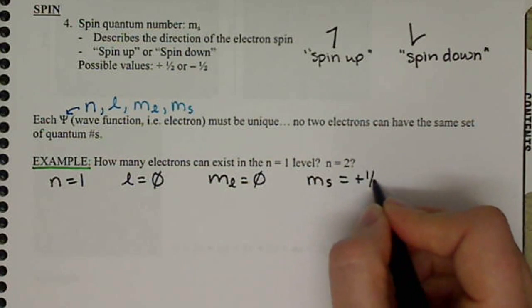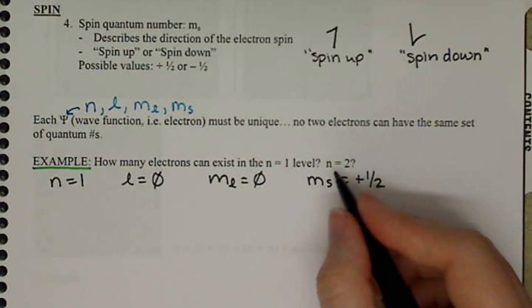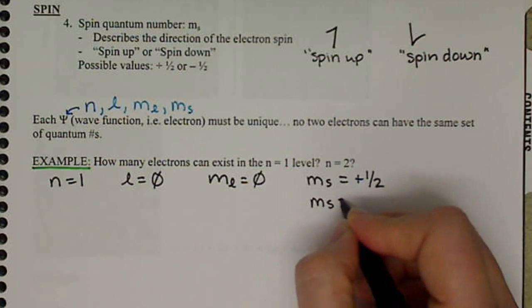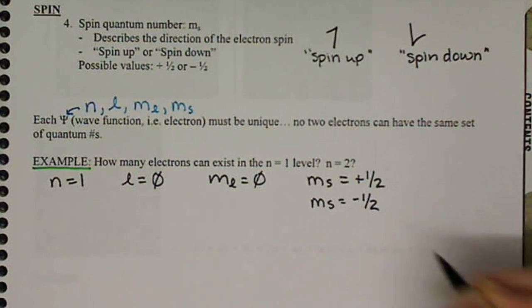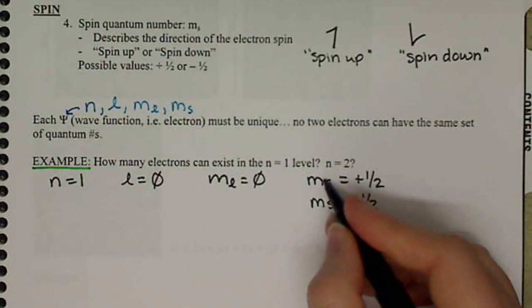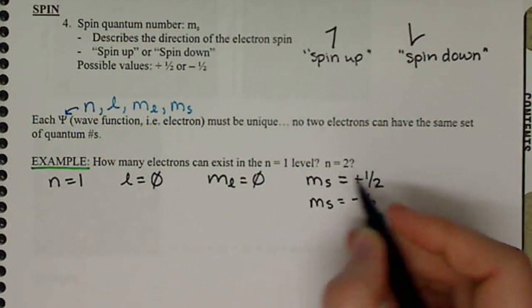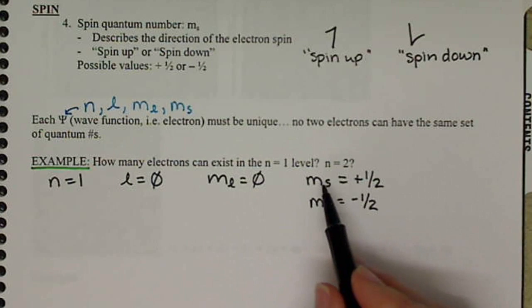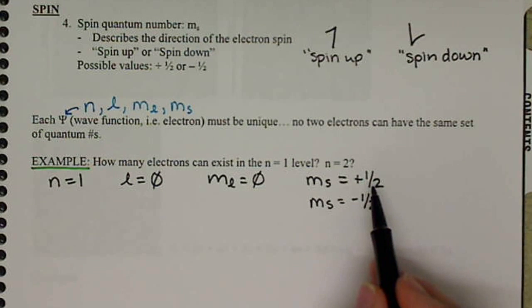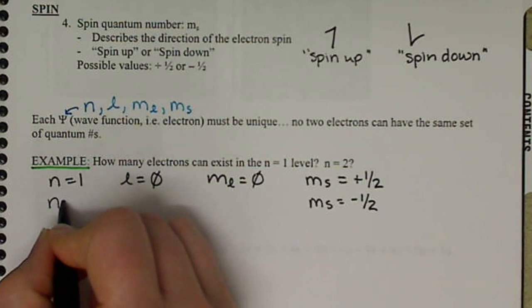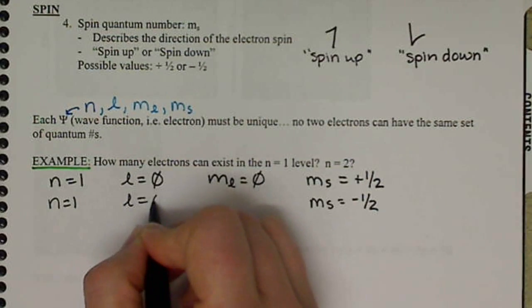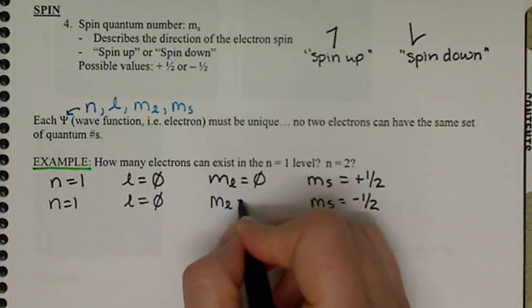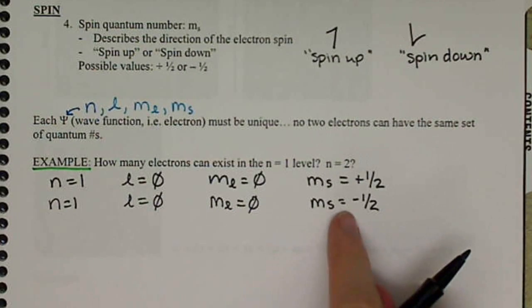And then we have two options for M sub S. We can either be a plus 1 half, or M sub S can be minus 1 half. Okay, so here's one electron described by N equals 1, L equals 0, M sub L equals 0, M sub S equals plus 1 half.